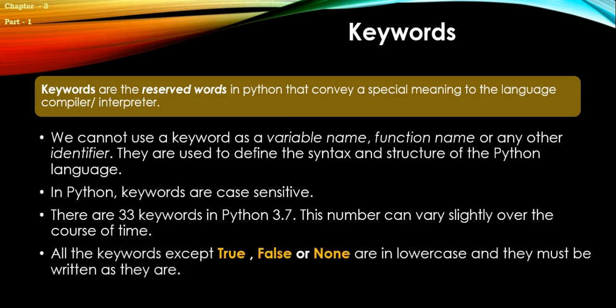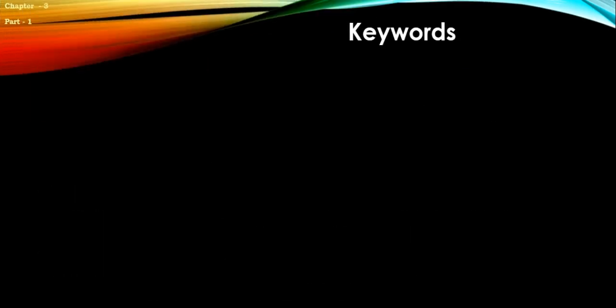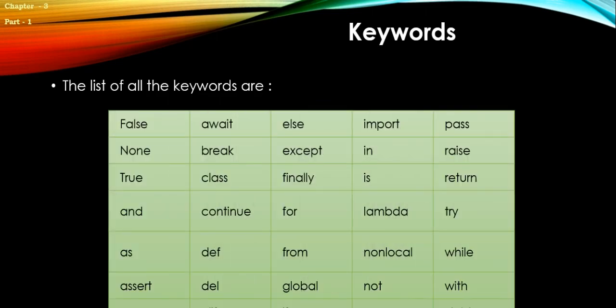In Python, keywords are case sensitive. There are 33 keywords in Python 3.7, and this number can vary slightly over the course of time. All the keywords except True, False, and None are in lowercase and must be written as they are. We can see a list of all the keywords: False, await, else, import, pass, None, break, except, in, raise, True, class, finally, is, return, and others.